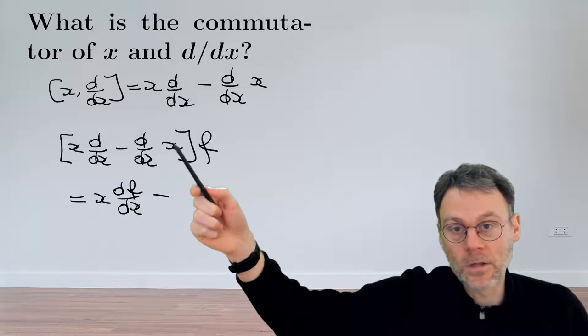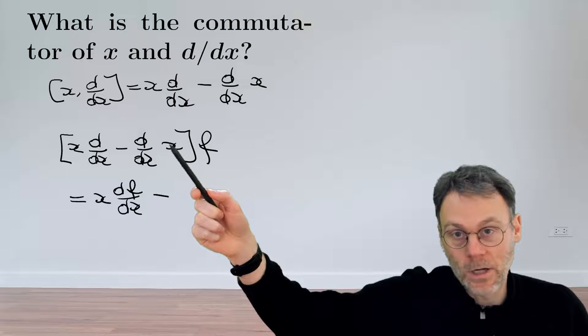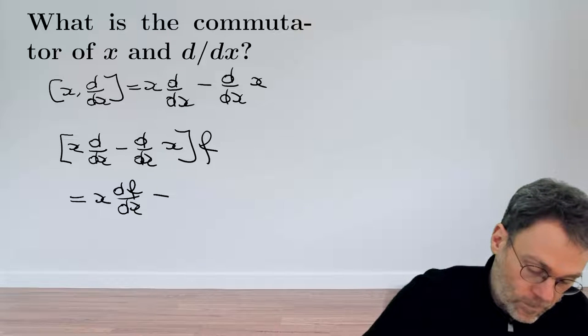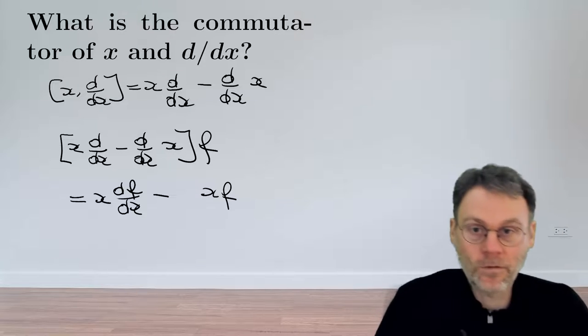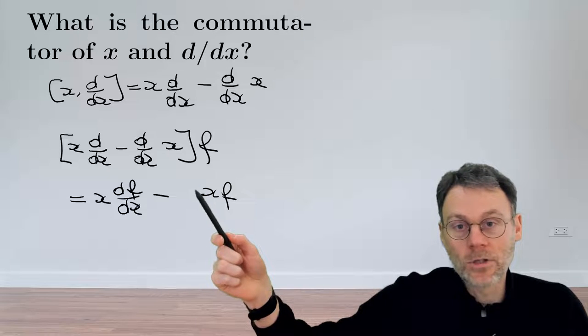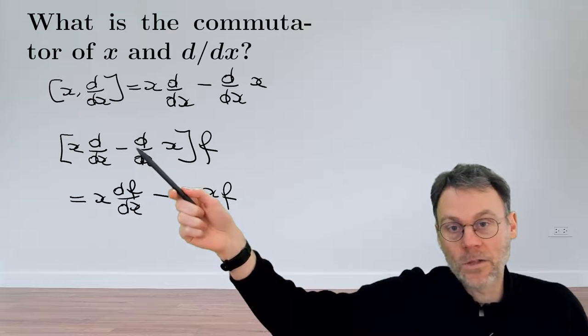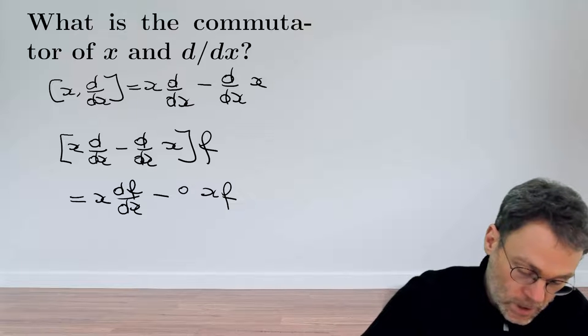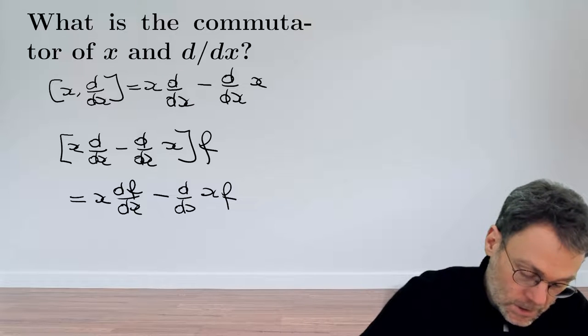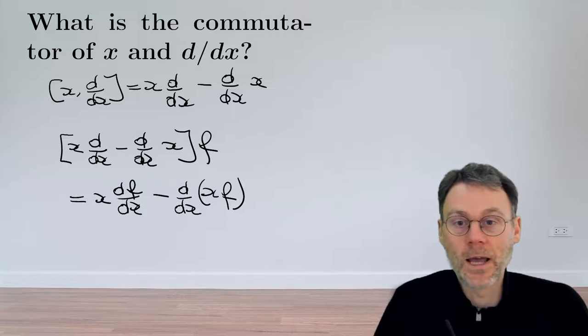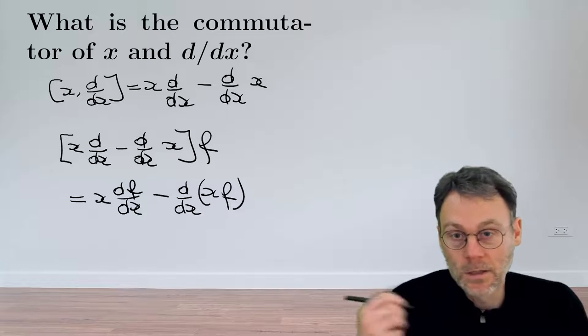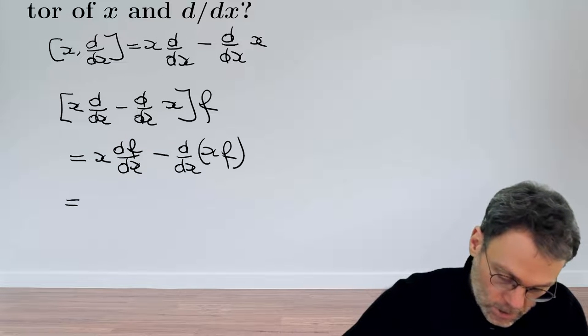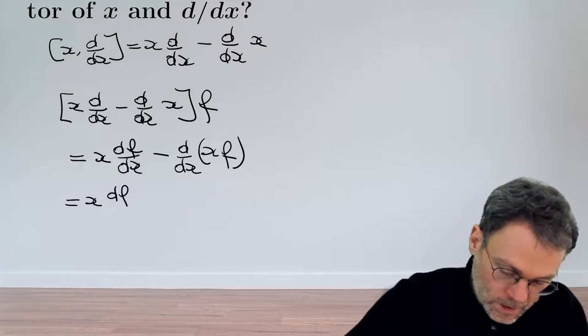This is the operator x, so we first have x times f. Then that result, x times f, gets fed to the next operator, which takes the derivative with respect to x. So we're looking at d/dx of this whole product, x times f. This is how you should interpret such an expression.